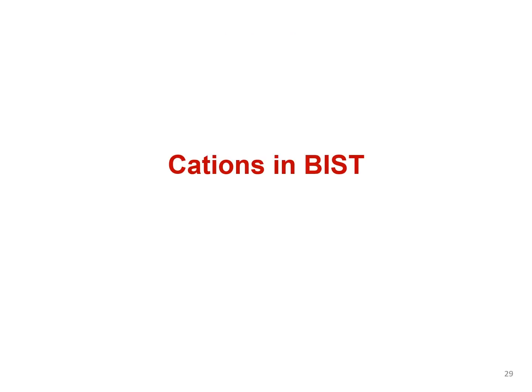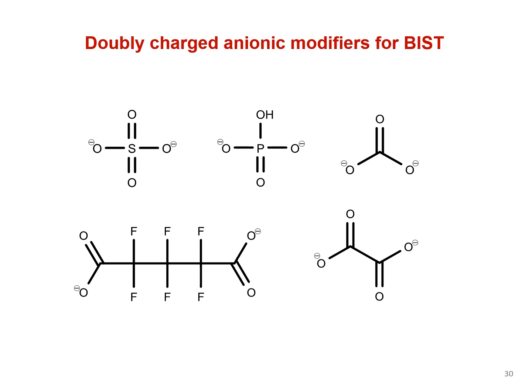We demonstrated already many examples of separation of cations in BIST with sulfuric acid as the ionic modifier, but there are many other multi-charged ionic modifiers that can retain cations with BIST. In addition to sulfuric acid, other ionic modifiers include, but are not limited to, phosphoric acid, carbonic acid, hexafluoroglutaric acid, and oxalic acid. Like TM-DAP, hexafluoroglutaric acid is volatile enough to be compatible with ELSD, CAD, or mass spec detection.